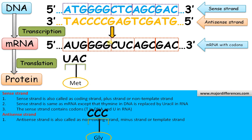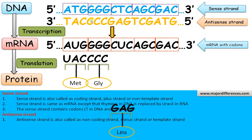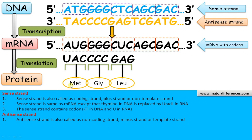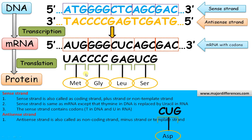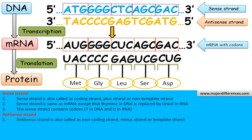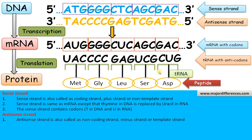Proteins are formed upon translation. There is a tRNA molecule: tRNA has an amino acid attached to one end and an anticodon at the other end, which actually interacts with the codons. The tRNA molecule acts as an adapter. This is tRNA with anticodons, and this is the peptide finally formed.